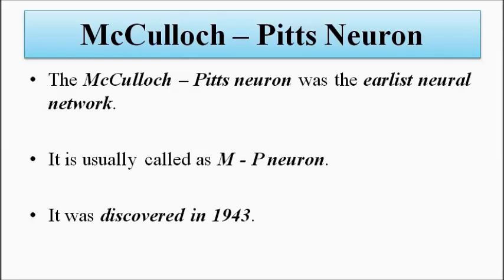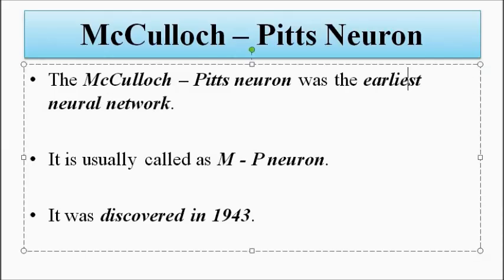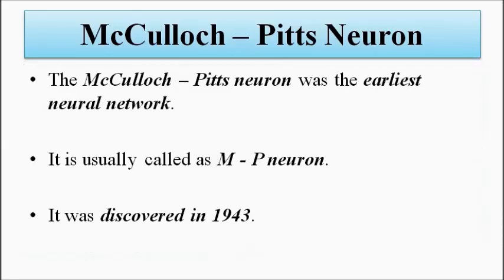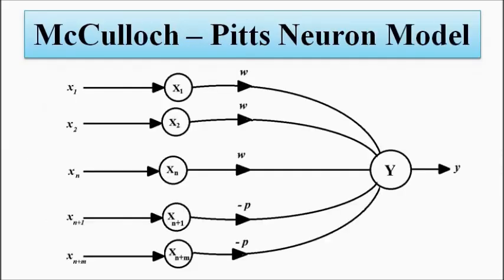It was discovered in the year 1943, and the basic representation of the McCulloch-Pitts neuron model is like this, consisting of the input layer of neurons and then the output consisting of a single neuron.